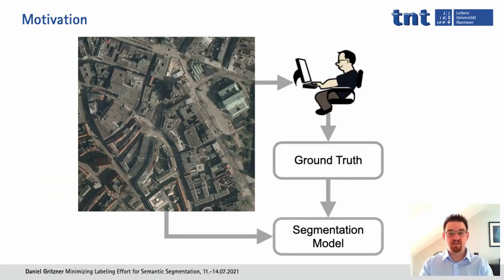Machine learning, in particular deep learning, allows us to train performant models for the automated analysis of aerial images. For example, we could train a model to predict a semantic segmentation — that means a pixel-wise classification of aerial images. This segmentation can then be used in further applications such as creating or updating maps, tracking city growth, or tracking deforestation.